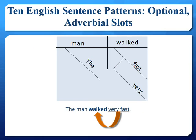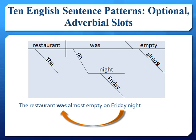Adverbials that modify verbs can be adverb phrases too. Adverb phrases consist of adverbs that modify adjectives, verbs, and other adverbs. In this sentence, the adverb 'very' is modifying another adverb 'fast,' and the adverbial 'very fast' is modifying the intransitive verb 'walked.' Though the adverbial phrase 'on Friday night' ends the sentence, we write it under the verb in the diagram to show that it is modifying the verb. Adverbials can be placed directly after the verb or at the end of a sentence, so there is some freedom in where we might write adverbial phrases.